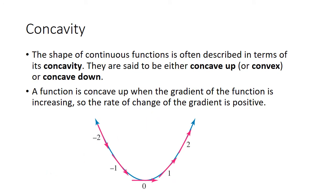Now we're going to move into an important concept concerning derivatives, which is the concavity of a function. We use the word concavity to describe the shape of continuous functions — they can be concaving up or concaving down. A function is known as concave up if the gradient of the function is increasing. If you look at this quadratic function, the gradient function is increasing because you can see the rate of change of the gradient is positive.